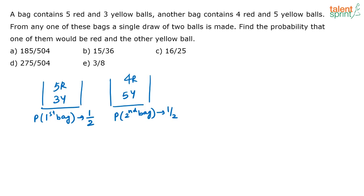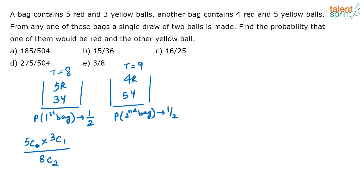Now, suppose you select the first bag. It has five red and three yellow balls — eight balls in total. The probability of getting one red and one yellow from this bag is: out of five reds select one (5C1), and out of three yellows select one (3C1), divided by the total ways of selecting two balls from eight (8C2).